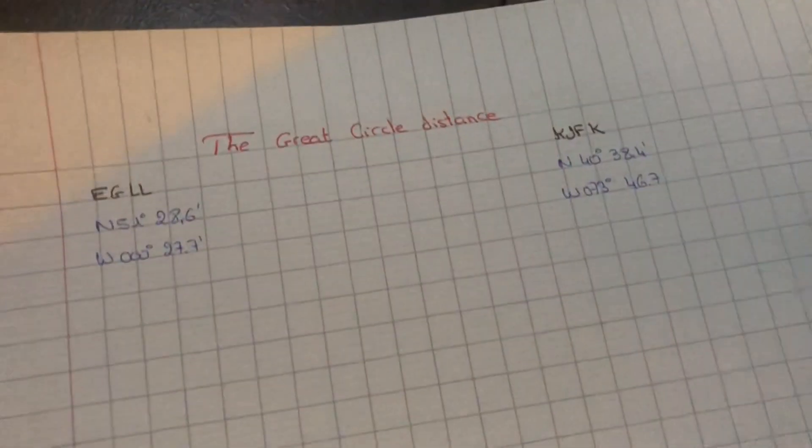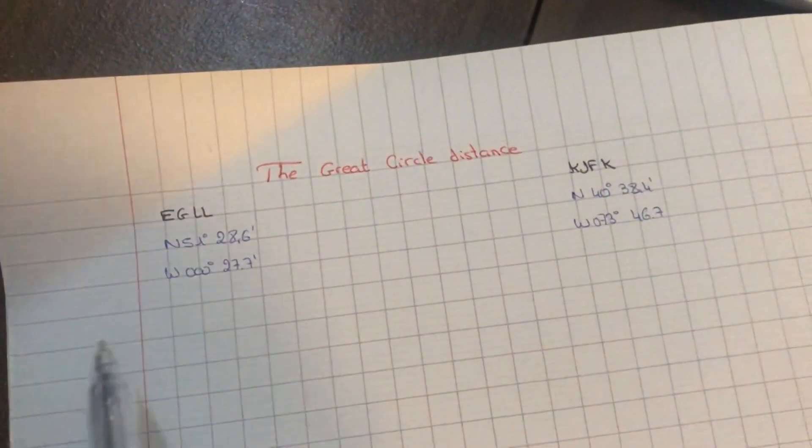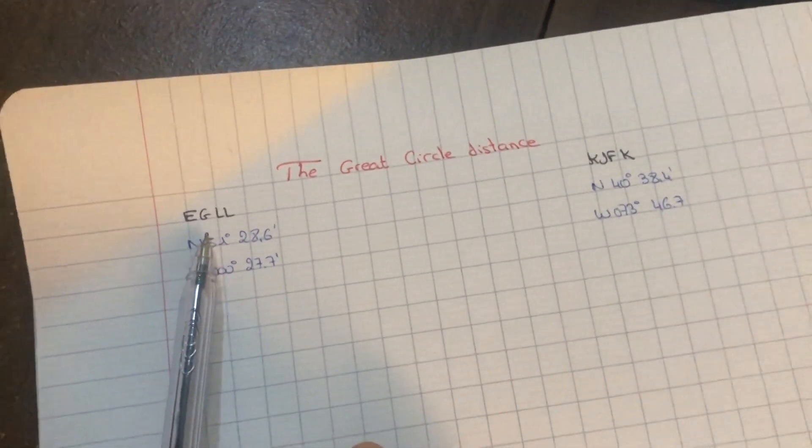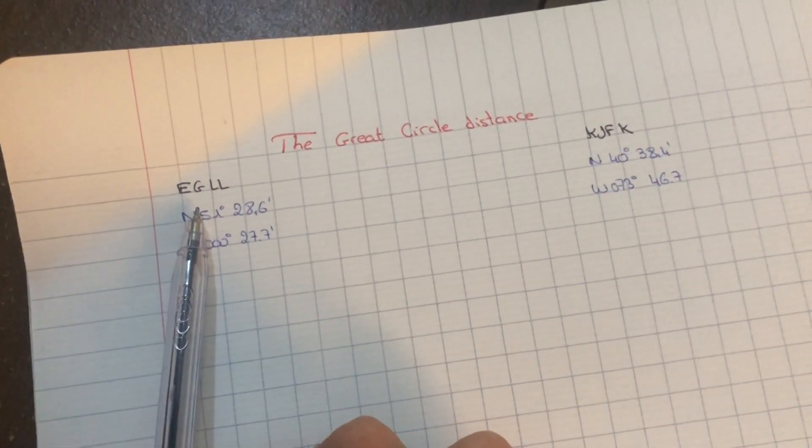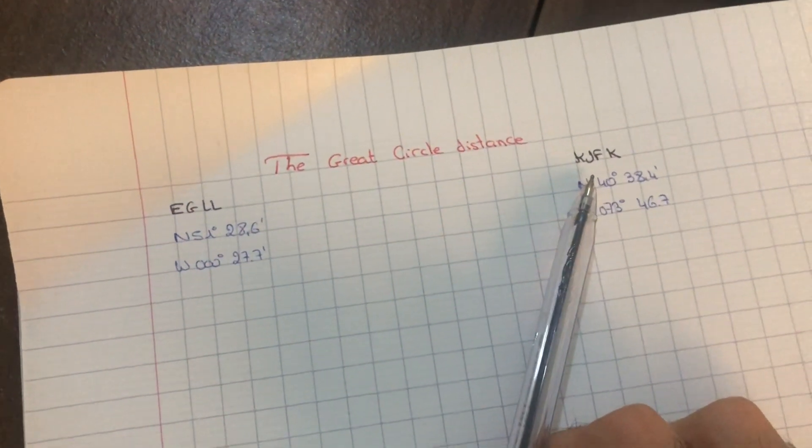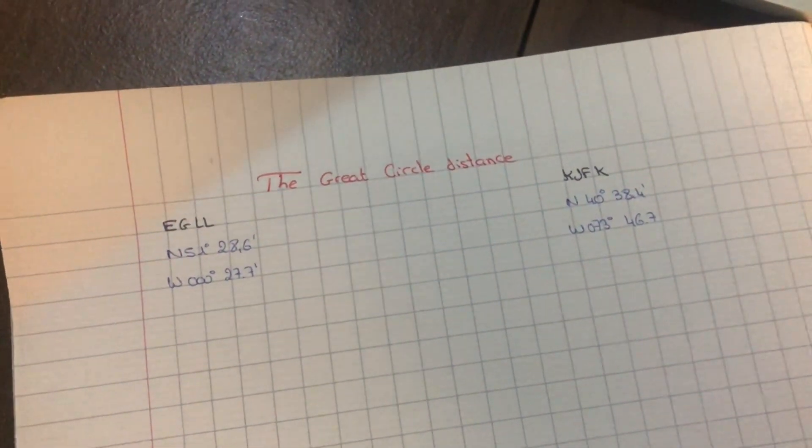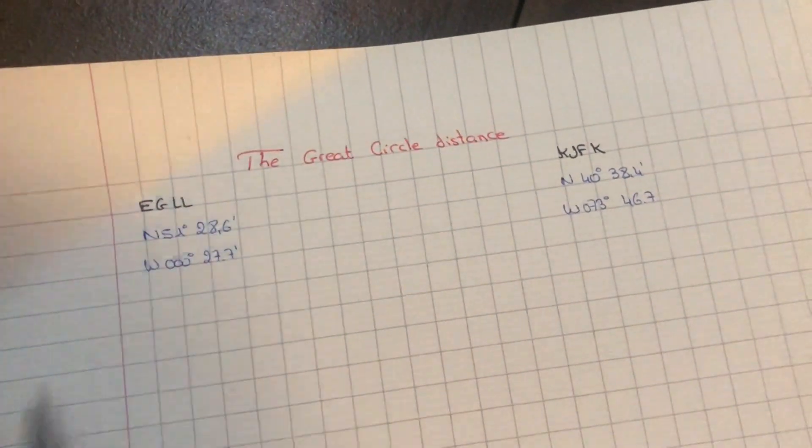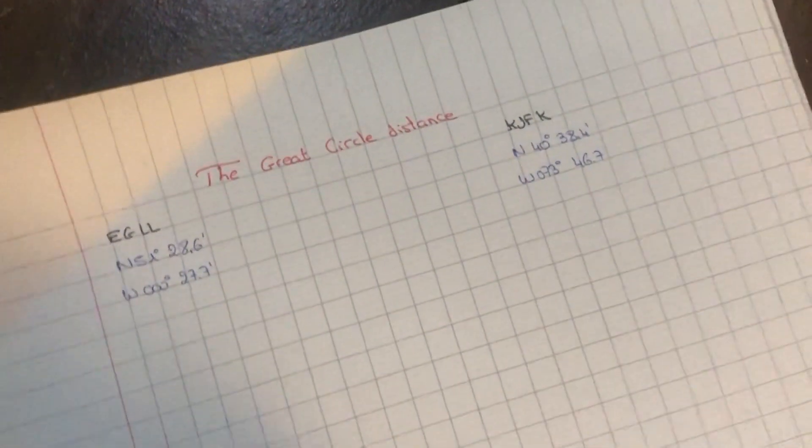So we have this little example here. Say we're flying from EGLL, which is London Heathrow Airport, to KJFK, which is New York International Airport. These are the coordinates of each airport.